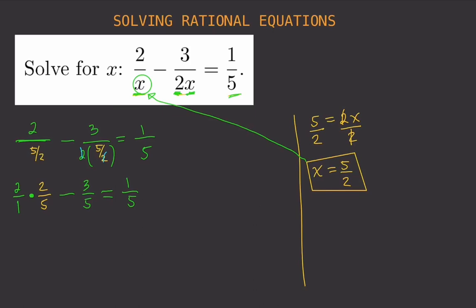We have 4/5 minus 3/5 with a common denominator of 5. That gives us (4 minus 3)/5 equals 1/5. And indeed, 1/5 equals 1/5 — that is a correct statement, confirming that our solution x equals 5/2 is correct.